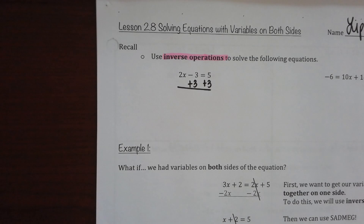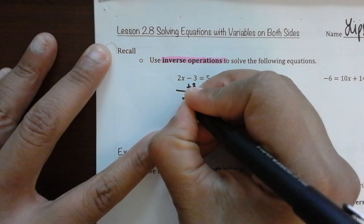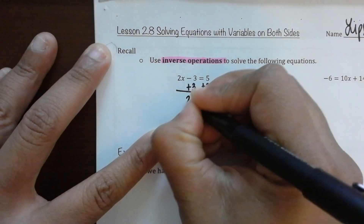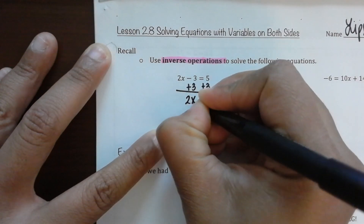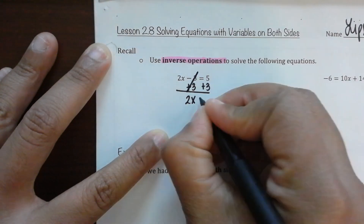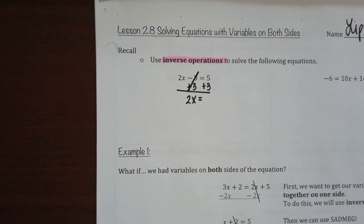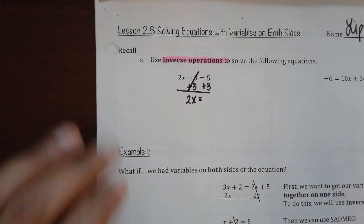What's brought down behind that 2x? Equals, and then what's being typed in? So, I have 2x. Those 3's cancel out. Equals, you typed in your calculator 5 plus 3. What did that get you?